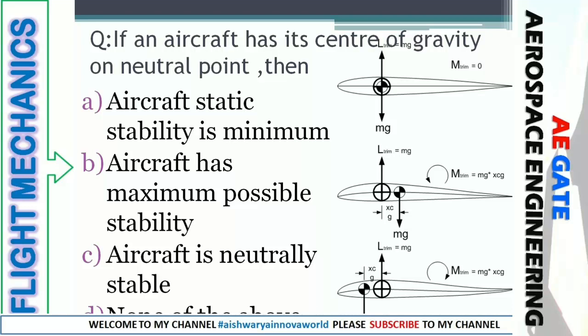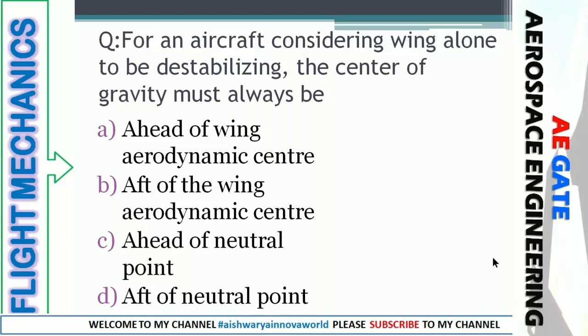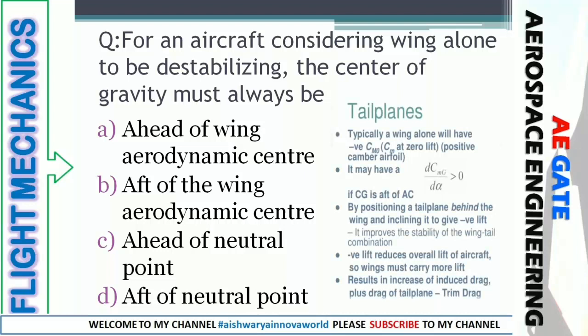For an aircraft considering the wing alone to be destabilizing, the center of gravity must always be: ahead of the wing aerodynamic center, after the wing aerodynamic center, ahead of neutral point, or after the neutral point. The wing alone will be destabilizing when dCM/d-alpha is positive — when the CG lies ahead of the aerodynamic center, the aircraft is unstable. The right answer is option B.